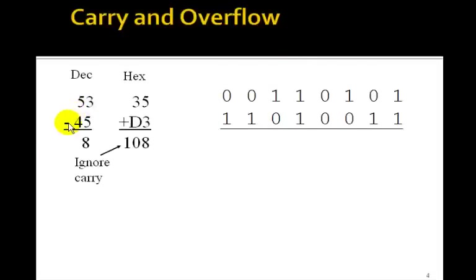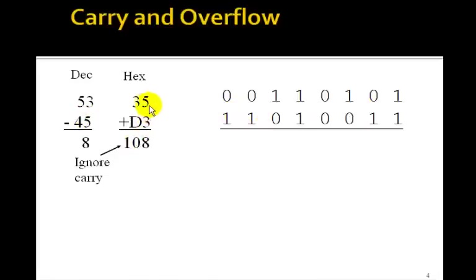Let's try another example: add 53 to negative 45. The correct answer is 8. The two's complement of 45 is D3 in hex. Adding 35 and D3 together gives 8, since D plus 3 is 0 with a carry, and ignoring the carry gives us 8.